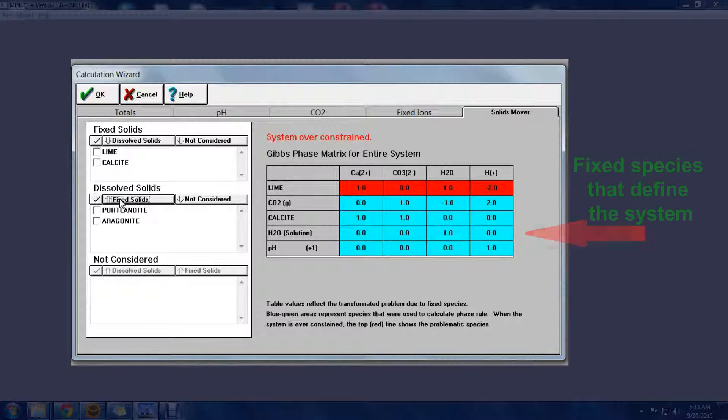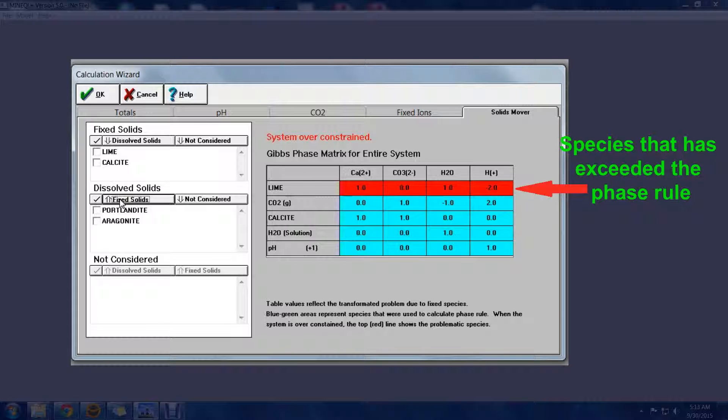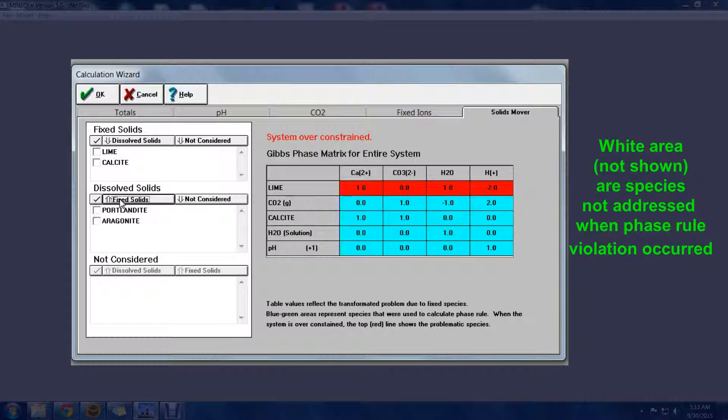The light blue area indicates species that are defining the system. A red line indicates a species that has exceeded the phase rule. And the white area, not present here, indicates species that were not addressed when the phase rule violation occurred.